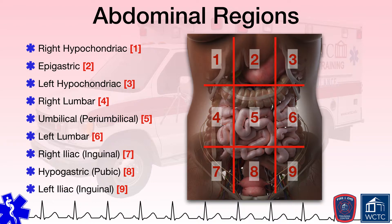Umbilical or peri-umbilical refers to the area around the umbilicus or navel. Iliac refers to the ilium, which is the uppermost part of the hip bone. Lastly, we already know that hypo means under and gastric refers to the stomach, so hypogastric means under the stomach or, in this particular case, the area in the lower abdominal region.